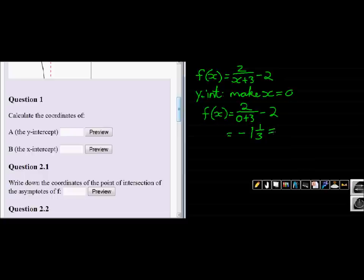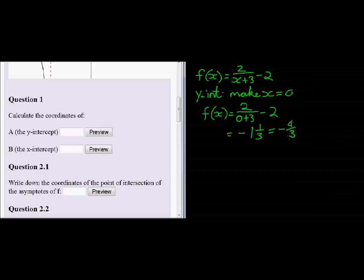We can write it as an improper fraction, which is -4/3. This is better for input. So the y-intercept is when x = 0, then y = -4/3.